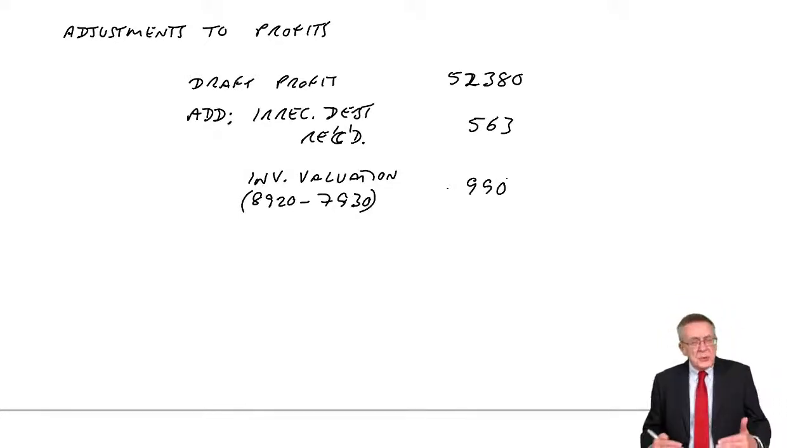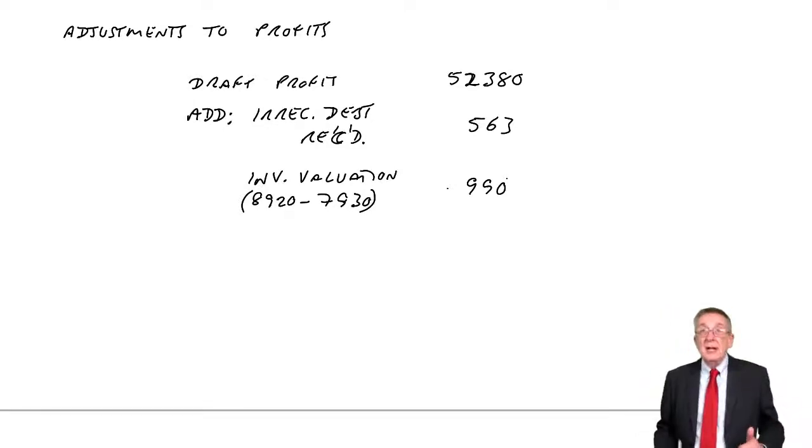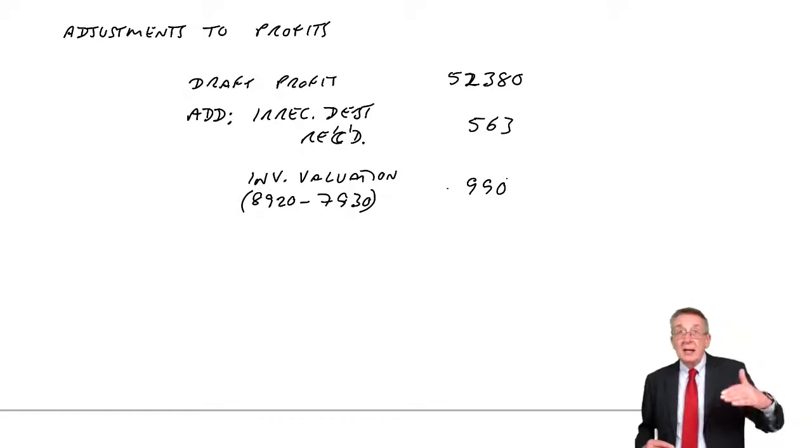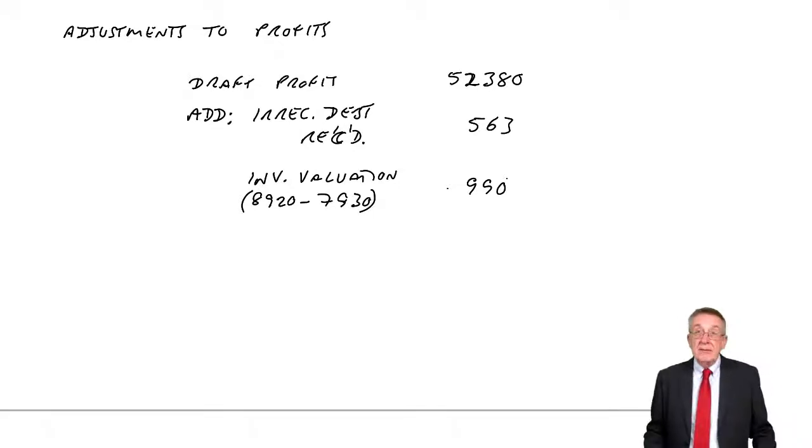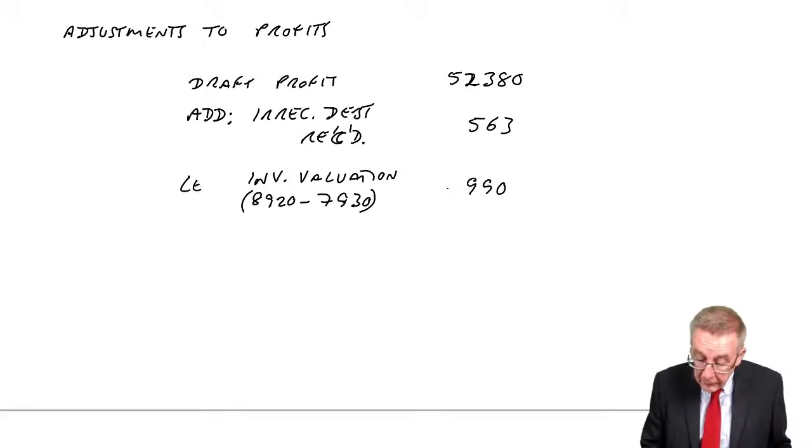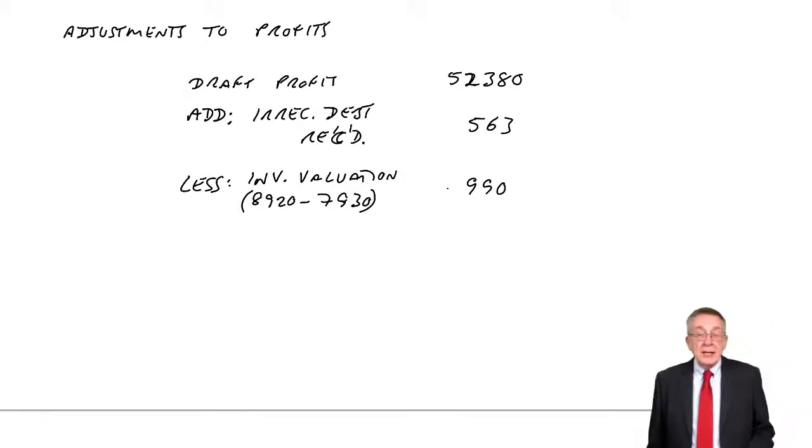However, if we reduce the value of the closing inventory, how will that affect the profit? Will it make the profit higher or lower? I did stress this before in the lectures on inventory, that always, if closing inventory is lower, we'll end up with lower profit. If closing inventory is higher, we'll end up with higher profit. Here we're reducing inventory. The inventory will be lower, therefore the profit will be lower. If you're unsure, go back to the lecture on inventory because I did stress that it was important.